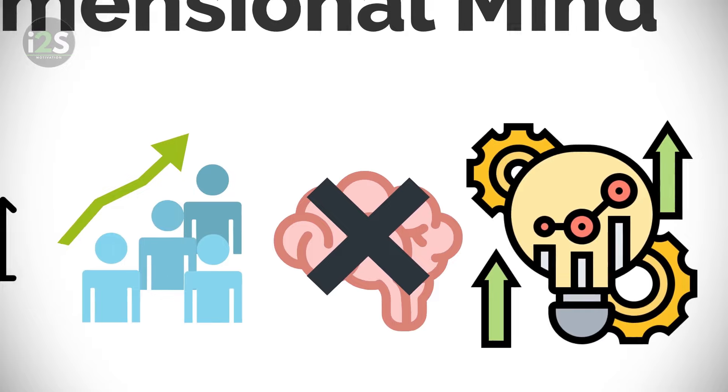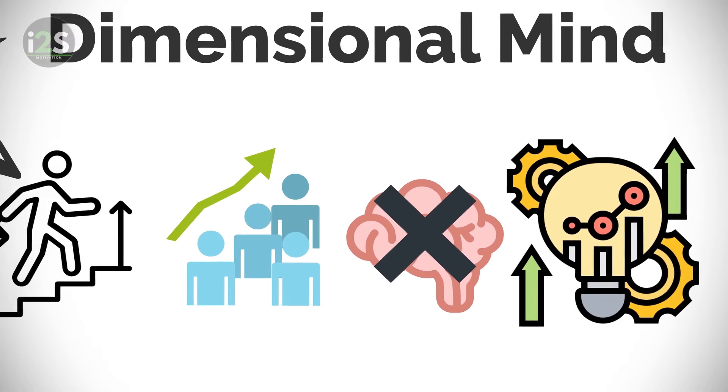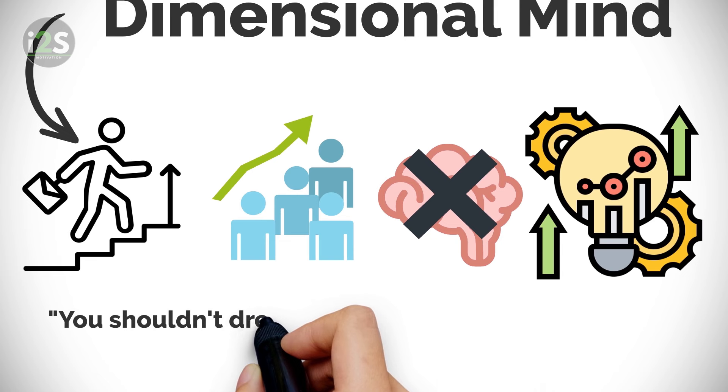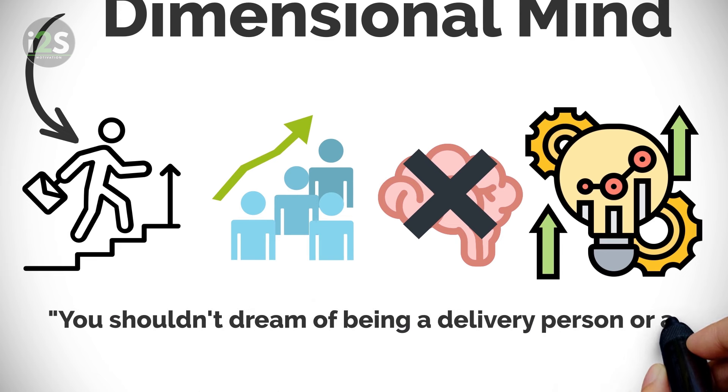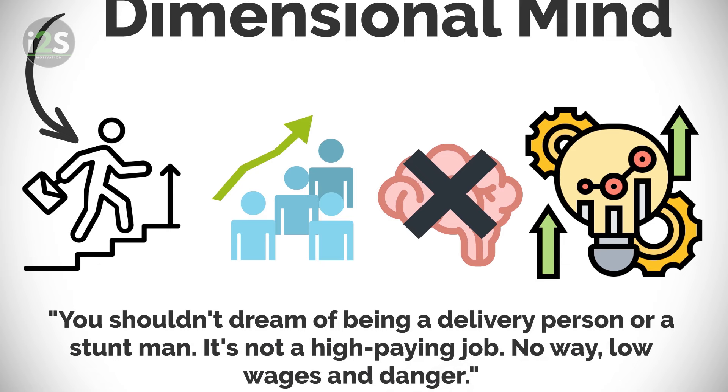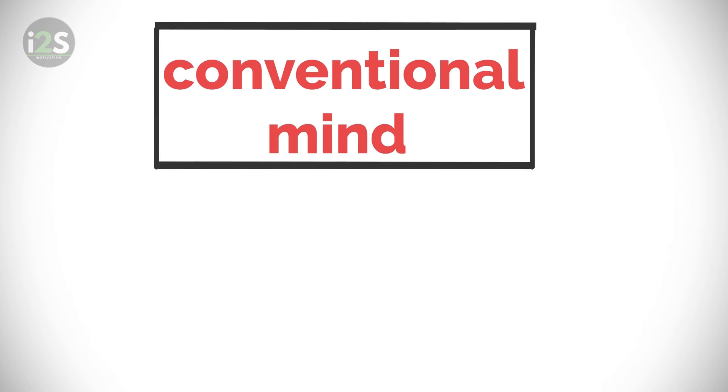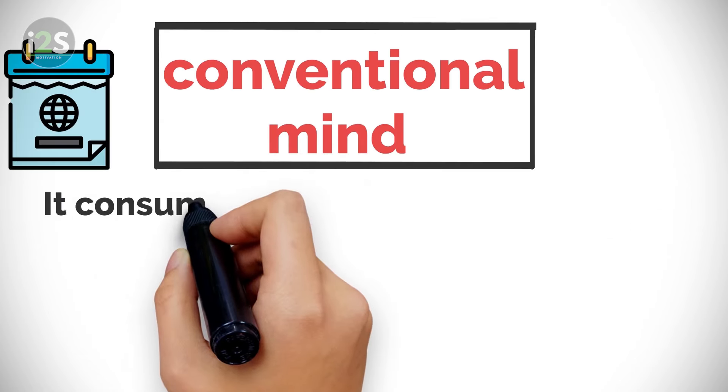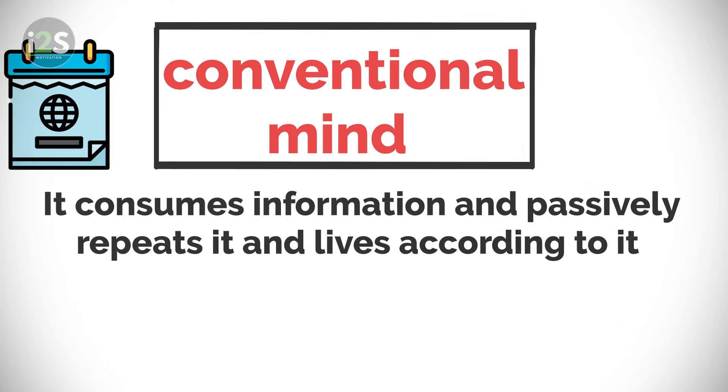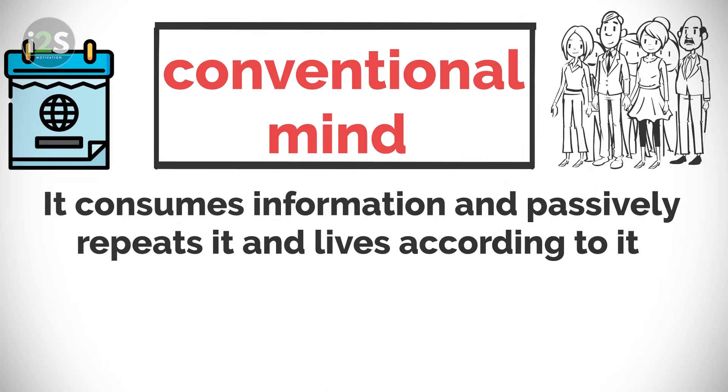The conventional mind is the part of you that watches a conversation like that and wants to say, you shouldn't dream of being a delivery person or a stuntman. It's not a high paying job. No way, low wages and danger. The conventional mind is very used to conventions. It consumes information and passively repeats it and lives according to it. This is what most of us adults do.